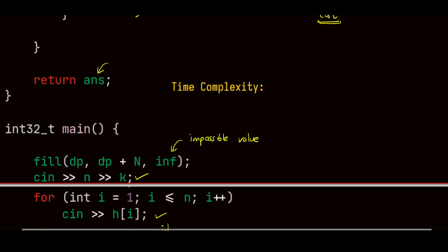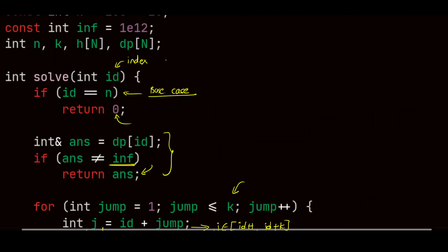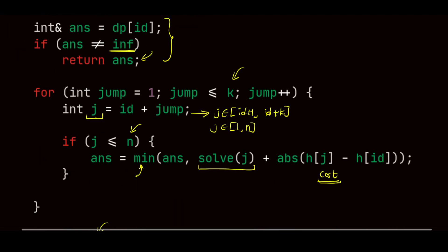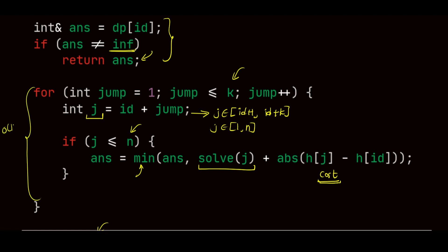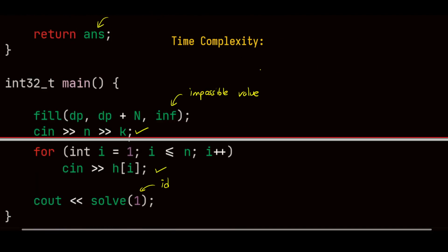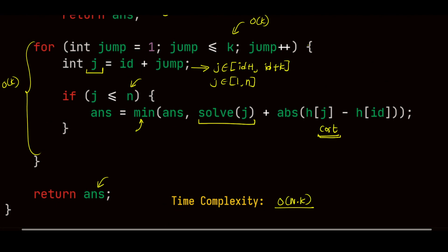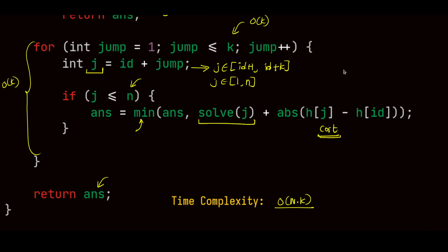The time complexity for this solution: the number of unique states is O(n) for the n different positions, and the transitions per state are O(k), giving an overall time complexity of O(n * k). That's it for this video — if you found this useful or have any doubts or suggestions, do let me know in the comments. Thank you.